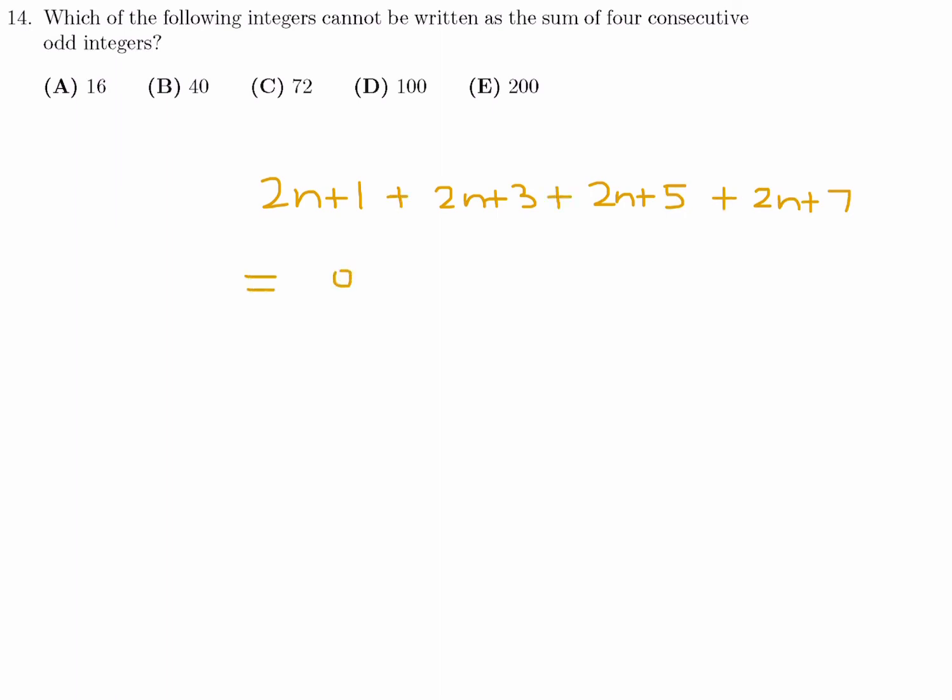Add them all up and get 8n plus 16. Factor out an 8 and we get n plus 2. So basically, four consecutive odd integers, when you add them up, they are going to be a multiple of 8. So which one of these is not a multiple of 8? Because they want the one that cannot be written like that.